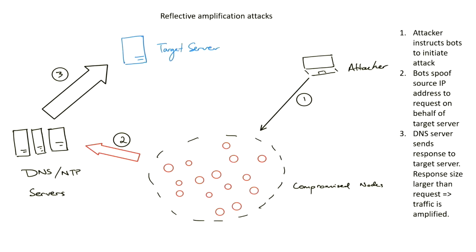Smart environments are a great network for attackers to exploit because they have a large aggregation of IoT nodes. I want to briefly touch on the mechanisms of a reflective amplification attack. An attacker will instruct infected bots in the botnet to launch an attack. These bots send DNS or NTP requests to DNS servers, spoofing the source IP address of the target server through IP spoofing. When the DNS servers receive this request, they respond to the target server. Because DNS is a UDP-based service, it's very easy to fill up the network pipe of the target, and the request size is much smaller than the response size — amplifying the traffic sent to the target.